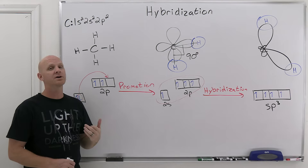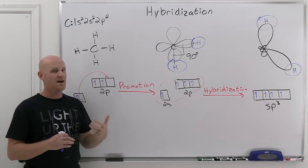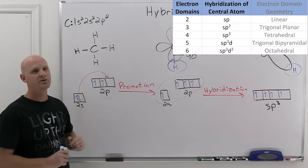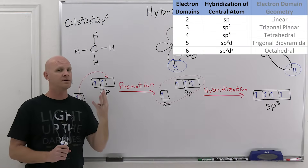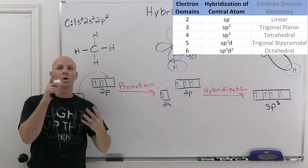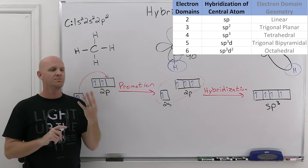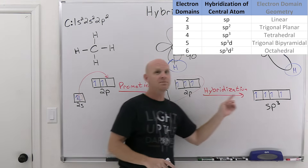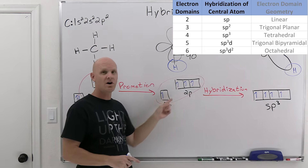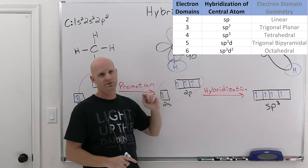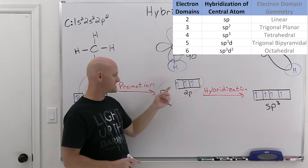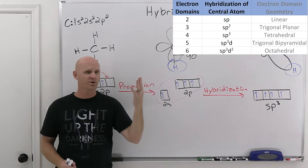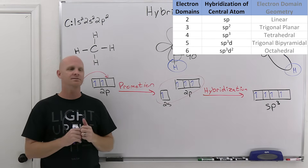You can simply look at the number of electron domains and know exactly what the hybridization is. If you've got four electron domains, you need four hybrid orbitals — one for every electron domain. To get four hybrid orbitals, you mix four original atomic orbitals: an s, a p, a p, and a p. So if you have four electron domains, you are sp3 hybridized.